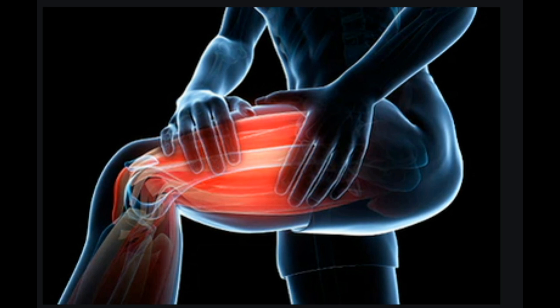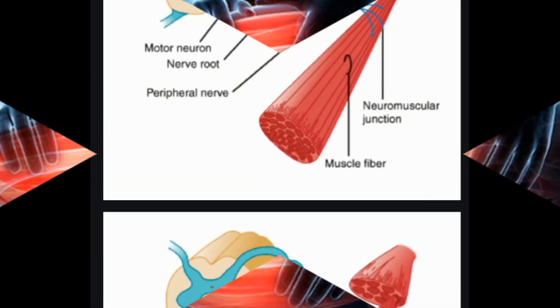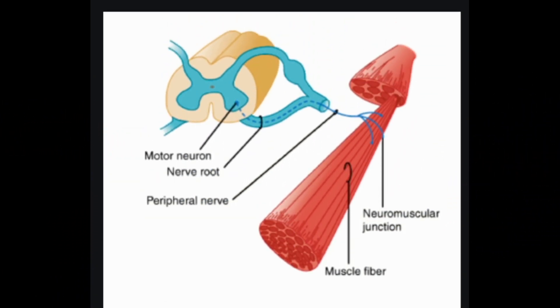Antispasmodics: centrally acting skeletal muscle relaxants (SMRs). Centrally acting SMRs are used in addition to rest and physical therapy to help relieve muscle spasms. They are thought to work by causing a sedative effect or by preventing your nerves from sending pain signals to your brain. You should only use these muscle relaxants for up to two or three weeks, as the safety of longer-term use is not yet known.